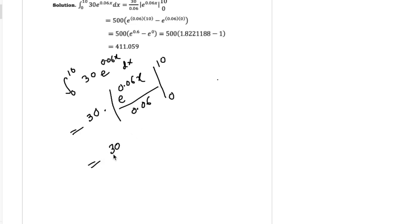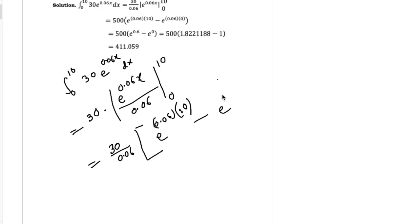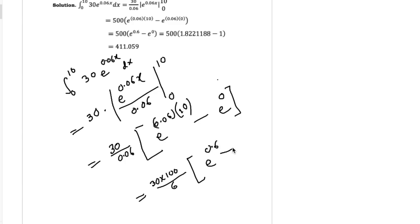Now replace x by its upper limit first: e to the power 0.06 times 10, minus e to the power 0.06 times 0, which equals 0. This simplifies to 30 times 100 divided by 6, times e to the power 0.6 minus e to the power 0, which equals 1. And this equals 500 times e to the power 0.6. You can calculate this using your calculator.